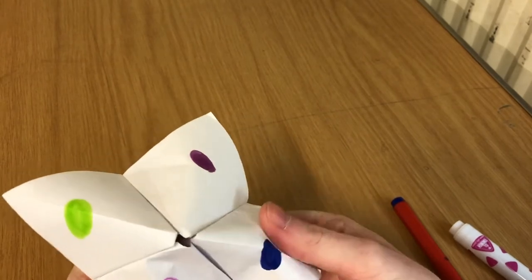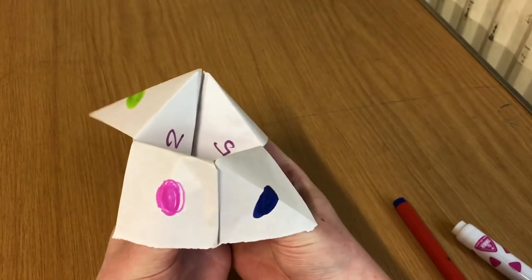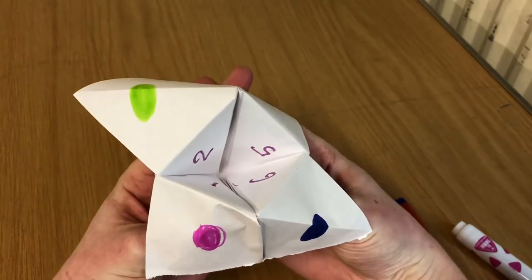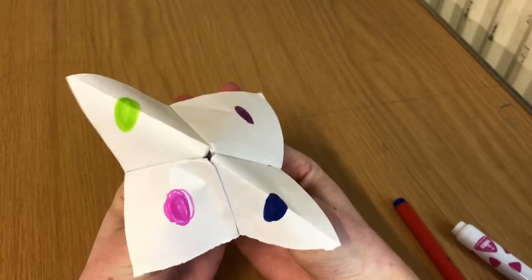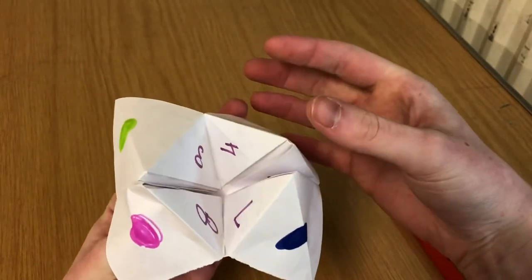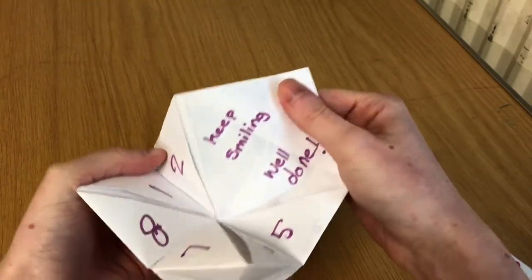So then you can choose a color, say green, so you can spell G-R-E-E-N and choose a number, say five: one, two, three, four, five. Choose another number, say three, and three says keep smiling.